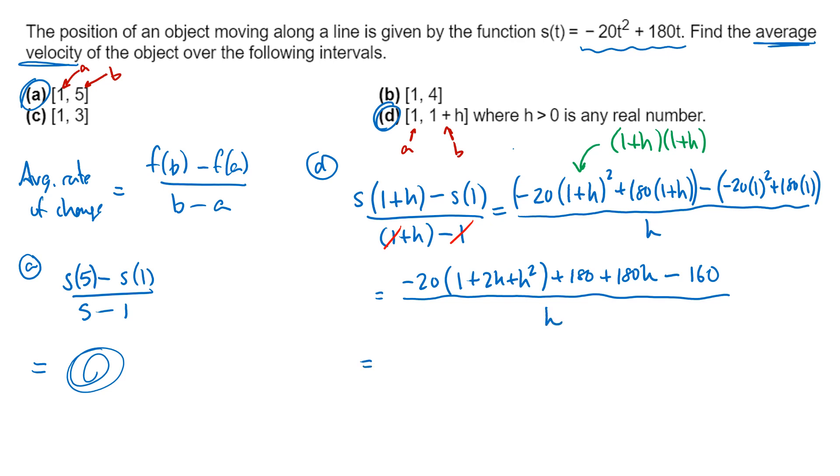So I'm going to continue to simplify, distribute my negative 20. So I get negative 20 minus 40h minus 20h squared plus 180 plus 180h minus 160. And again, still all divided by h. Now, negative 20 plus 180, that's positive 160 minus 160 is going to be 0. So all that stuff cancels out. I can collect some like terms here. So on the top, I've got 140h minus 20h squared, all divided by h.